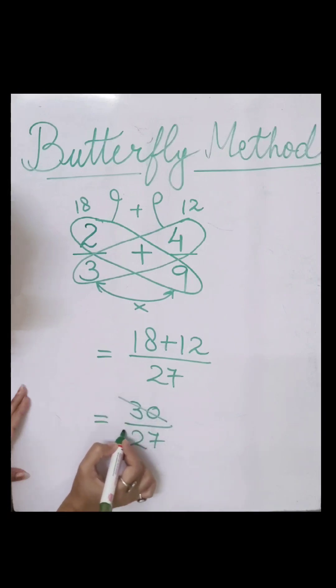Now to reduce it further, we will divide by 3. 3 goes into 30 ten times and 3 goes into 27 nine times. So your final answer is 10 upon 9.